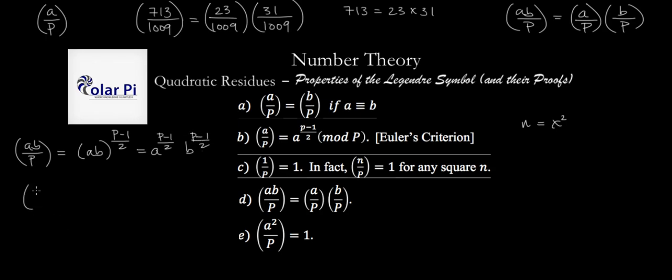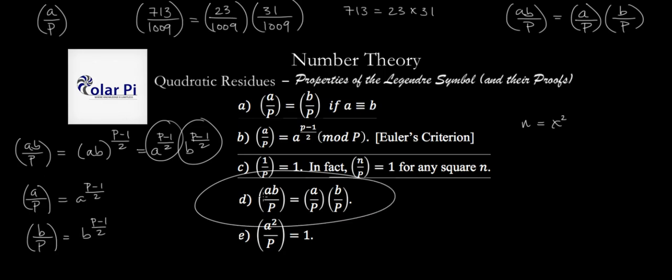But we know that A over P is equal to A to the power of P minus one over two and we know that B over P is equal to B to the power of P minus one over two. And therefore, we can replace this with A over P and we can replace this with B over P and therefore, as desired, we have property D. Yeah?